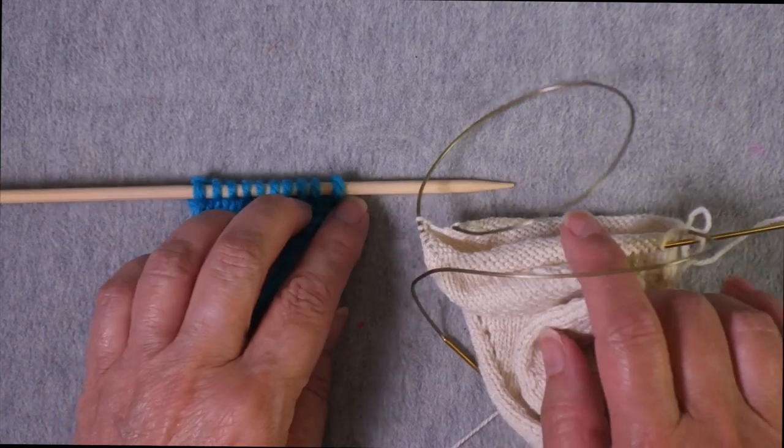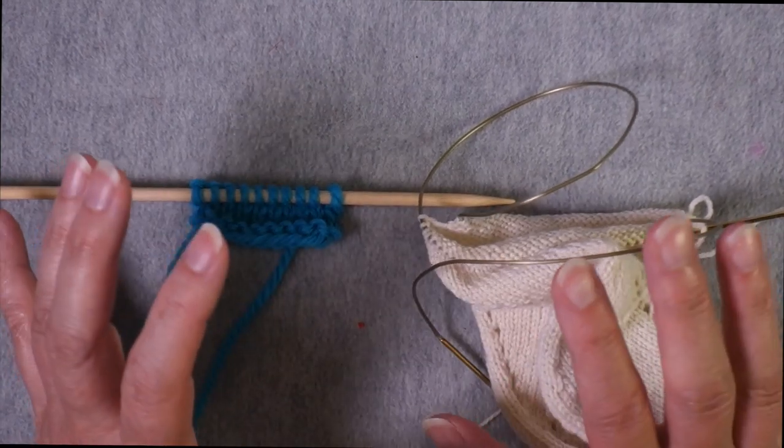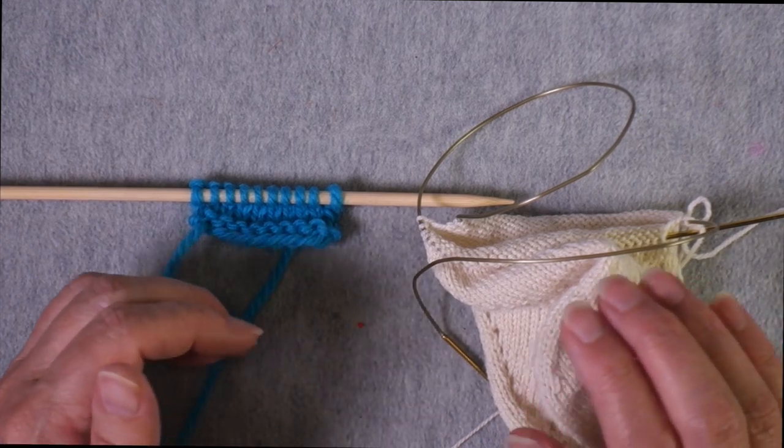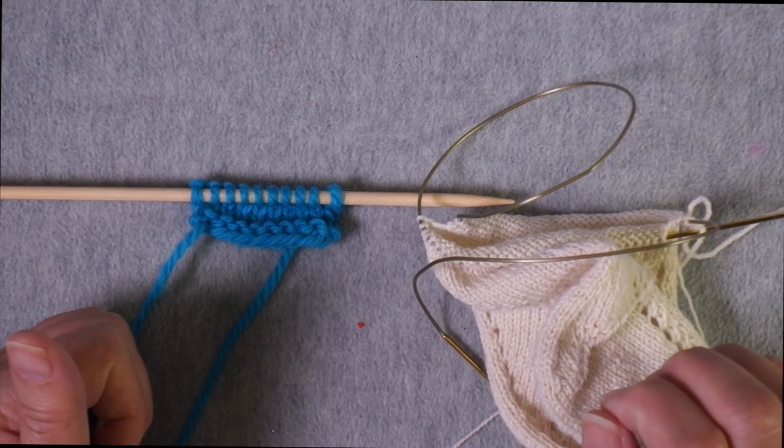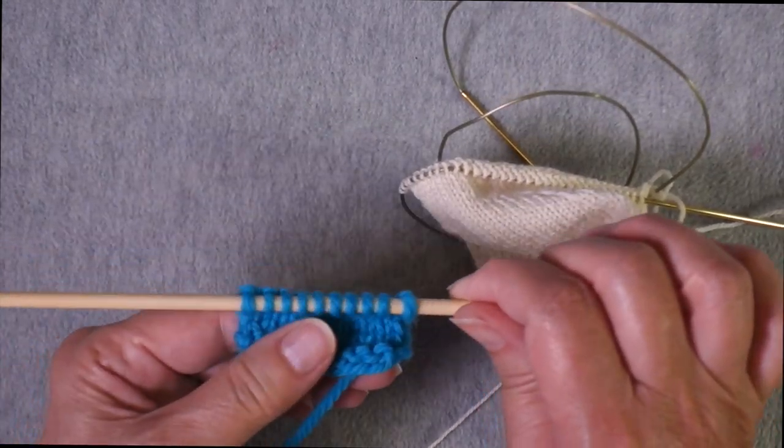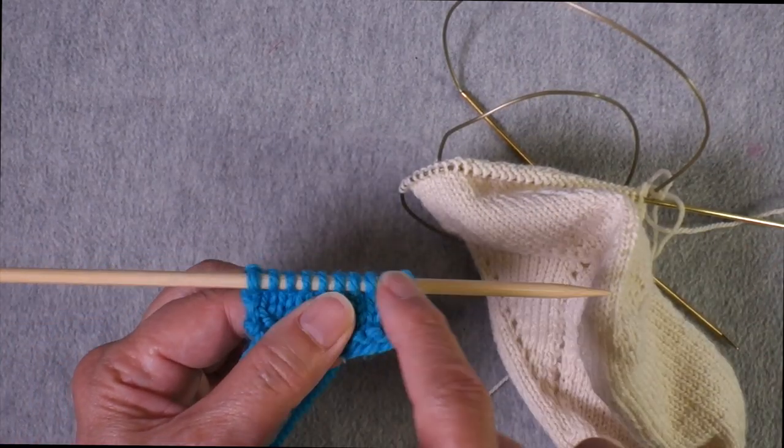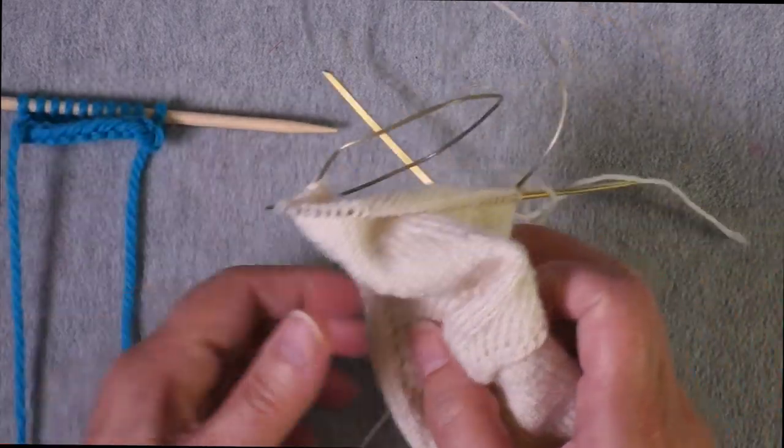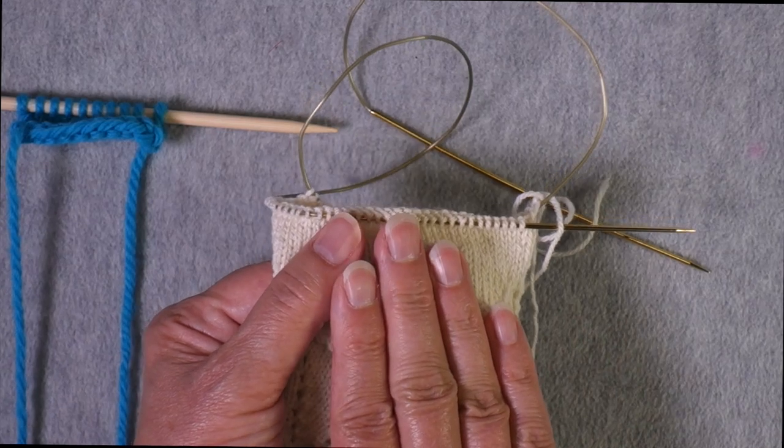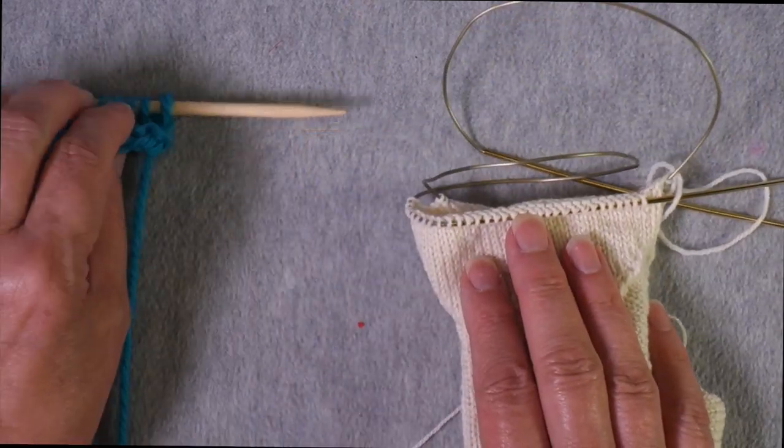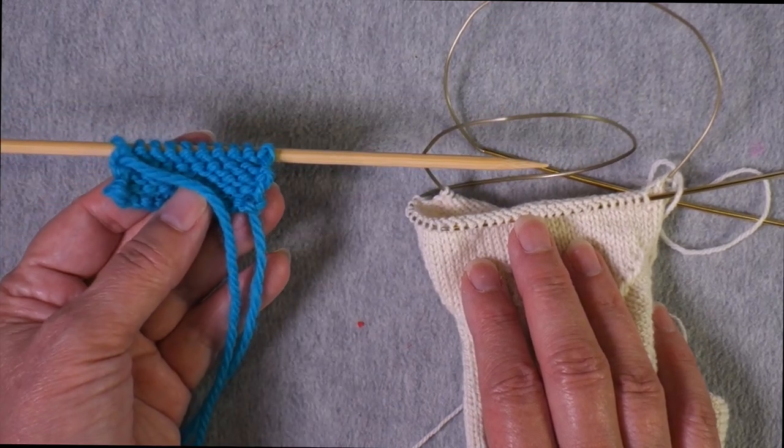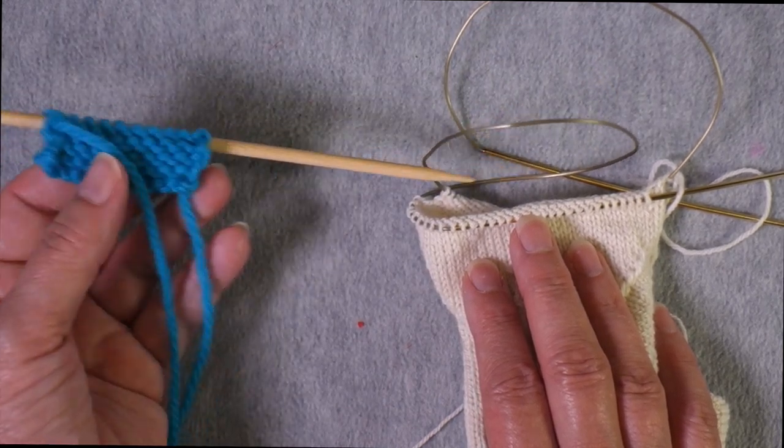Before we do that, I'm going to mention something that you likely already know, but I want it to be in your mind as we discuss reading knitting charts. And that is that when you knit, you can either knit flat back and forth in rows or you can knit in the round like this with the right side always facing you. Because when you knit flat, sometimes the right side is facing you and sometimes the wrong side is facing you.